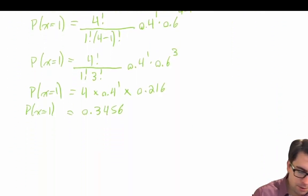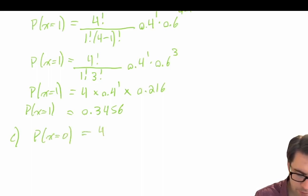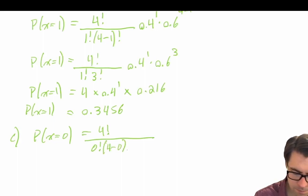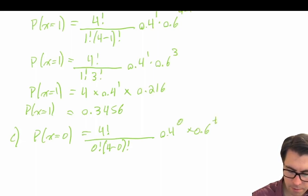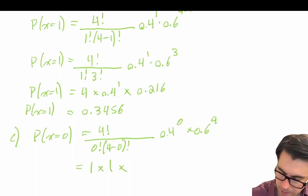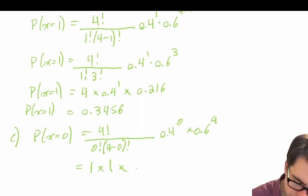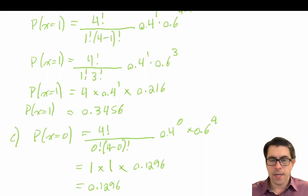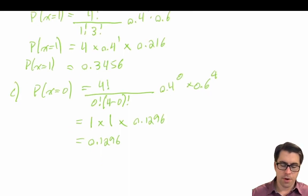Compute the probability that X equals zero. P(X = 0) equals 4 factorial divided by 0 factorial times (4 minus 0) factorial, times 0.4 to the power of 0, times 0.6 to the power of 4. Four factorial divided by 4 factorial equals 1; 0.4 to the power of 0 is also 1; and 0.6 to the power of 4 is 0.1296. So the final answer is 1 × 1 × 0.1296 = 0.1296.